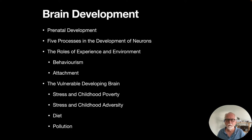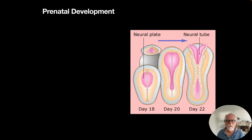For brain development, we're going to cover: first, prenatal development; then five processes in the development of neurons; then the roles of experience and environment, including behaviorism and attachment theory; and finally the vulnerable developing brain — how stress, childhood poverty, diet, and pollution can all affect the developing brain.